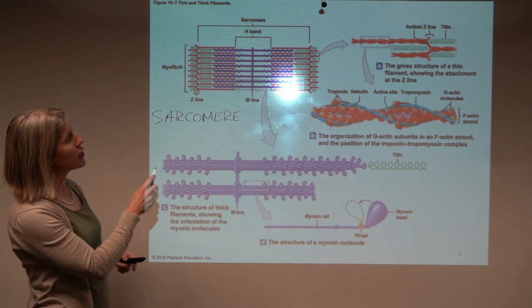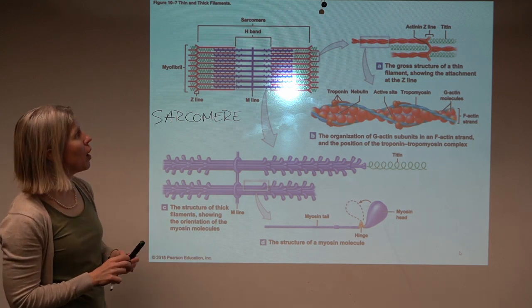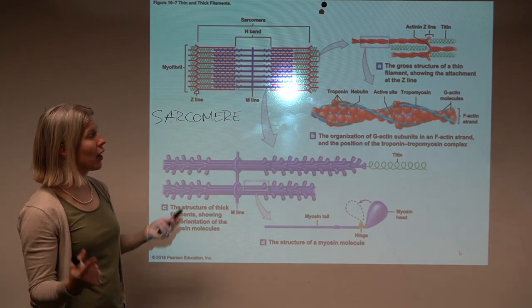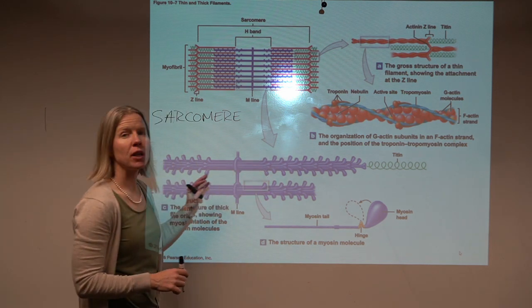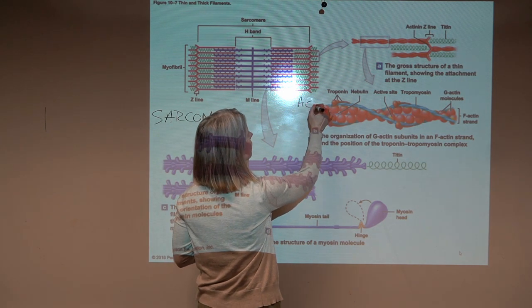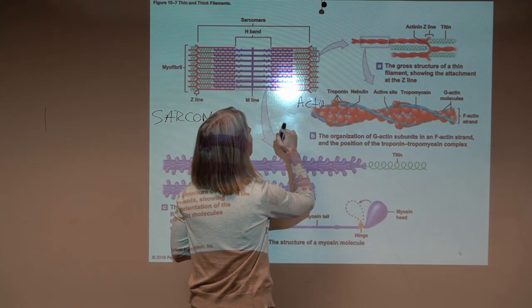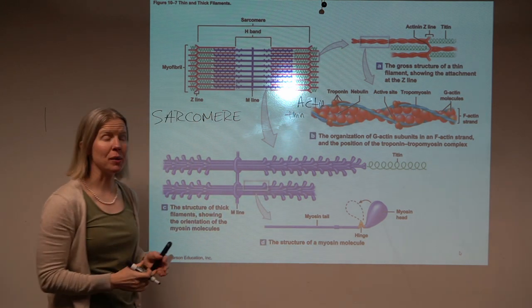Now, this is primarily made up of protein. Some of these proteins are the actual contractile proteins, and those are actin and myosin. Actin is shown here in pink, and this is considered the thin filament.